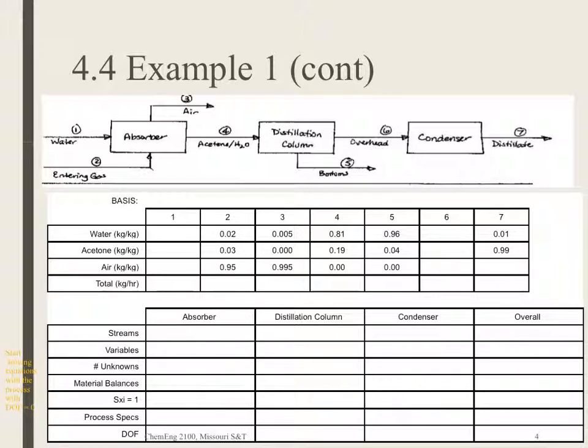So we want to build the material balance table and the degree of freedom table for this process. The material table, remember, is based on all of the streams. So I have these numbered as 1, 2, 3, 4, 5, 6, 7. And those are entered in the top line of the material balance table. My material components are water, acetone, and air. Those are entered on the left-hand side. And then, of course, the total. Now, the mass fractions are given in the table here. So all of those are given information.